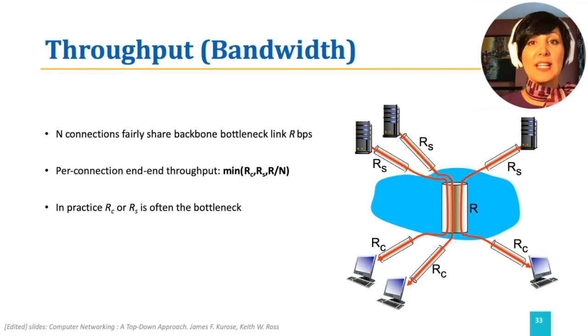Let's consider a network scenario where we have not isolated our sender-receiver pairs. Assume we have n sender and receiver pairs where there are n simultaneous downloads happening. There is a link along the path that is shared among n downloads. This link capacity is R. Assuming there is no other traffic in the network, we can say that the connection end-to-end throughput is minimum of RS, which is the access link capacity of the sender, RC, which is the access link capacity of the receiver, and R divided by n, where R is the link capacity of the shared link along the path.